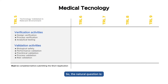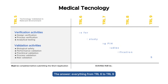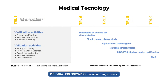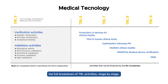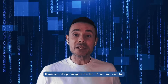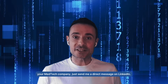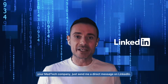So the natural question is: what can actually be funded by the EIC accelerator? The answer is everything from TRL 6 to TRL 9, which in practical terms covers all activities starting from first-in-human clinical studies preparation onwards. To make things easier, we've created an infographic that shows the full breakdown of TRL activities stage by stage. If you need deeper insights into the TRL requirements for your med tech company, just send me a direct message on LinkedIn.